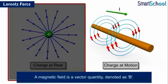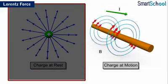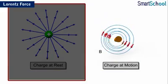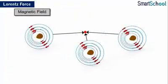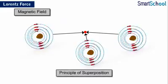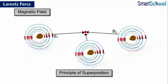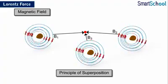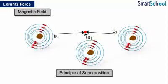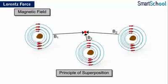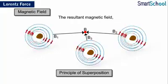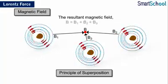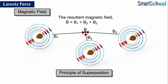A magnetic field is a vector quantity, denoted as B when represented vectorially. The properties of a magnetic field are identical to those of an electric field. Similar to an electric field, the magnetic field also obeys the principle of superposition. Consider B1, B2, and B3 as magnetic fields at a point due to three different sources, such as three current-carrying conductors. Then the resultant magnetic field B at the point is the vector sum of the individual magnetic fields, that is, B = B1 + B2 + B3.